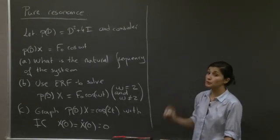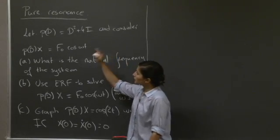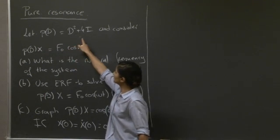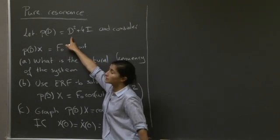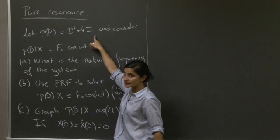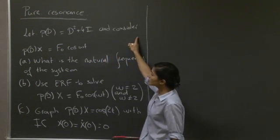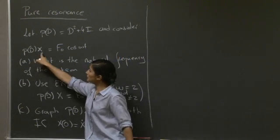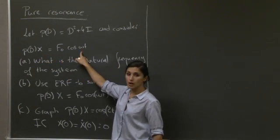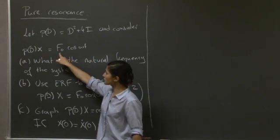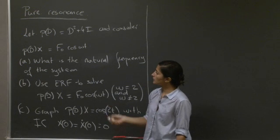Welcome to this recitation on pure resonance. So here we are given an operator pd equals d squared plus 4i, where d is the differentiation operator and i is the identity operator. And you're asked to consider the equation pd applied to x equals f0 cos omega t, where f0 is a constant.